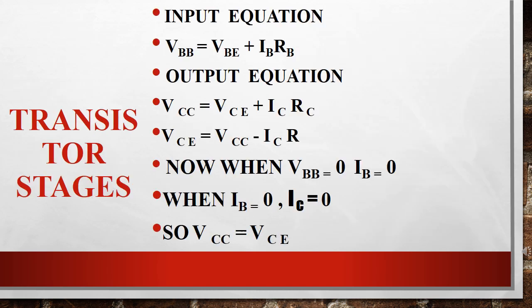Now, when VBB is equal to 0, how much is the current? Answer is, when VBB is equal to 0, that is input voltage, current is 0.